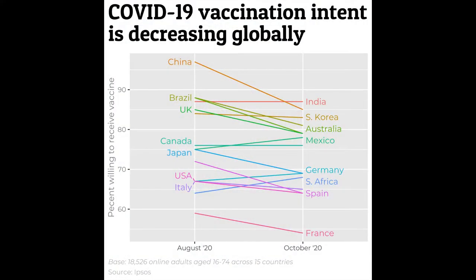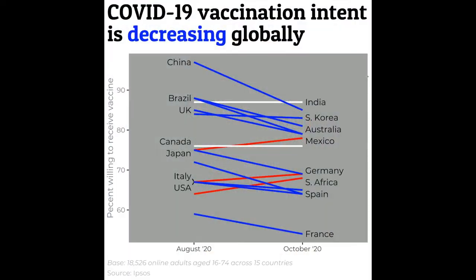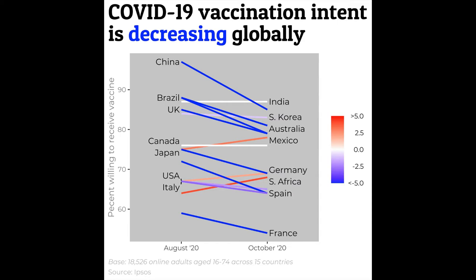Hey folks, I'm Pat Schloss and this is Code Club. In today's episode, we're going to take this slope chart showing people's attitudes towards receiving the COVID-19 vaccine from the fall of 2020, and modify it so that instead of coloring by the 15 different countries — yes, 15 different colors, which is a problem — we're going to try to re-represent the data using two colors: one to indicate a decrease in intent, and another to indicate an increase in intent. We're also going to see how we can use a gradient to show the degree to which people's attitudes changed rather than the absolute intent to change.